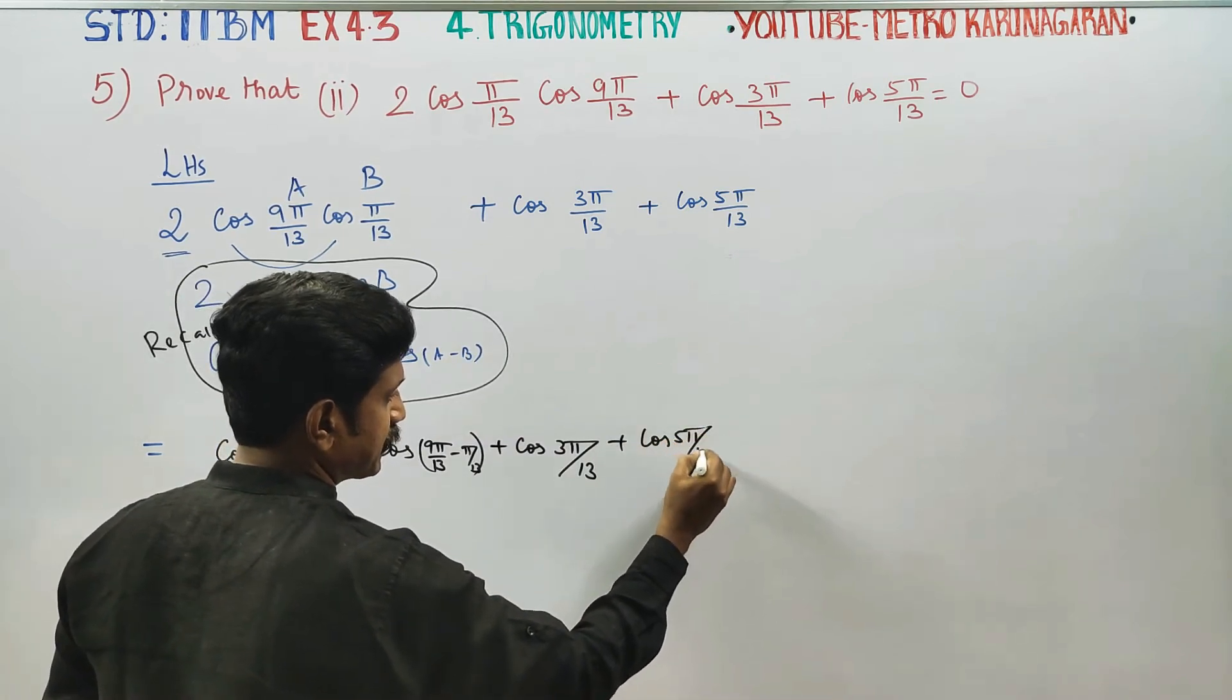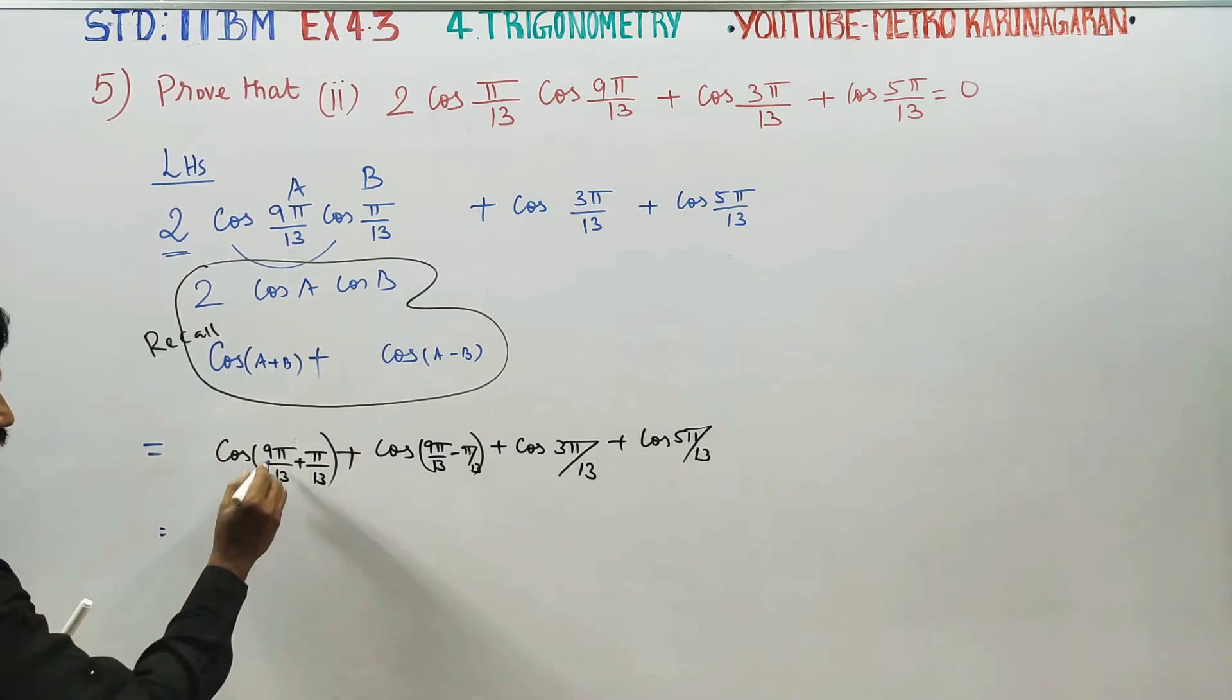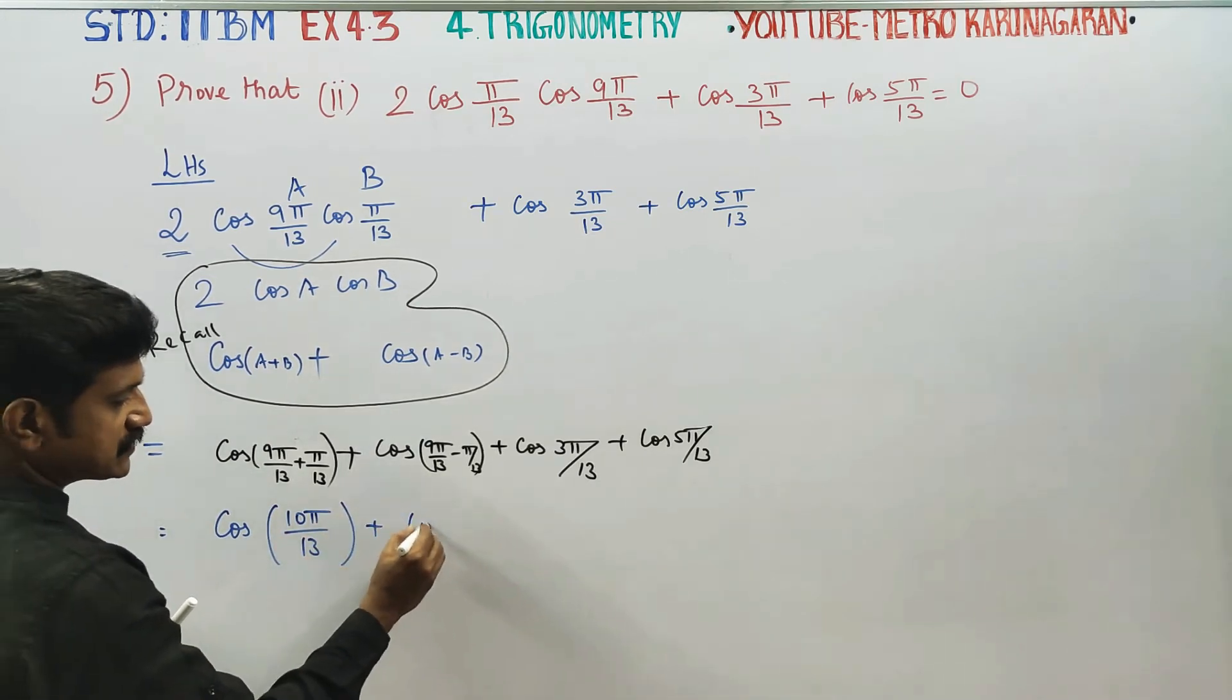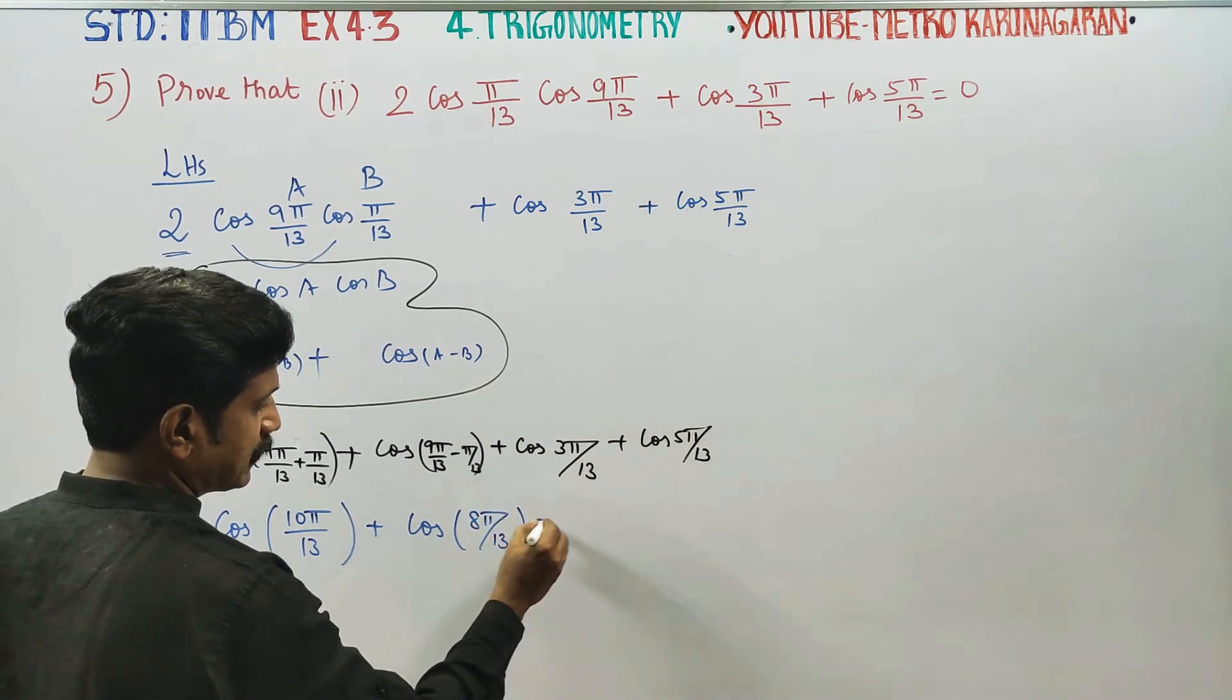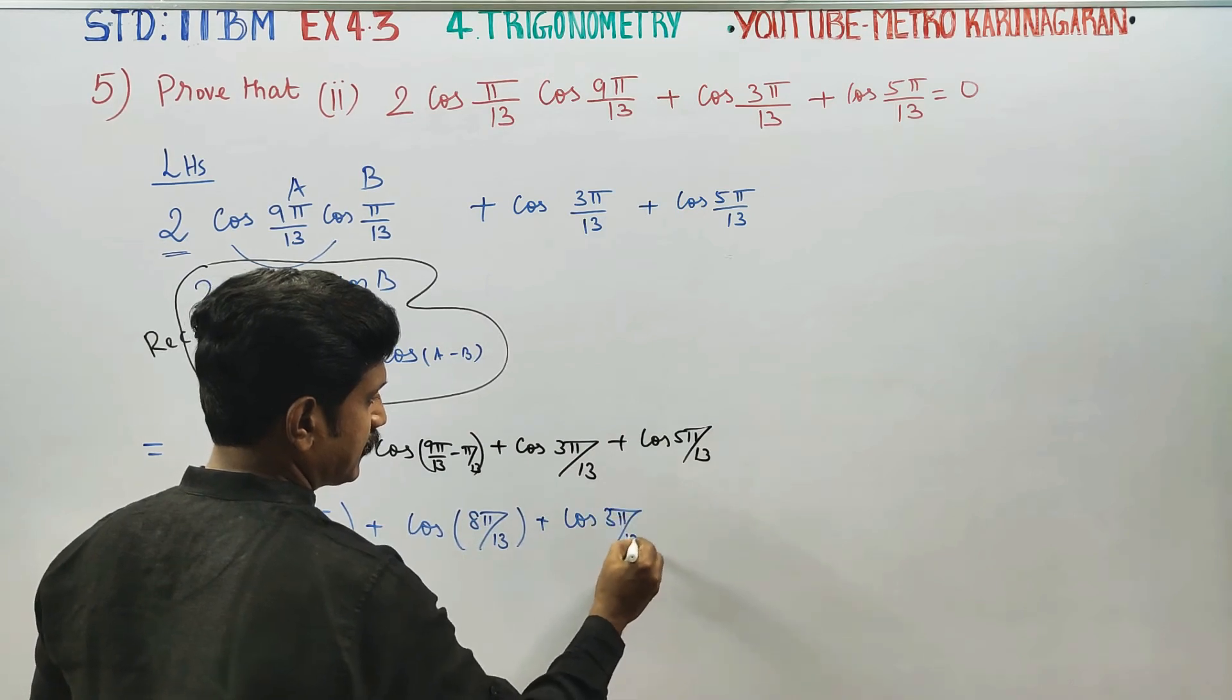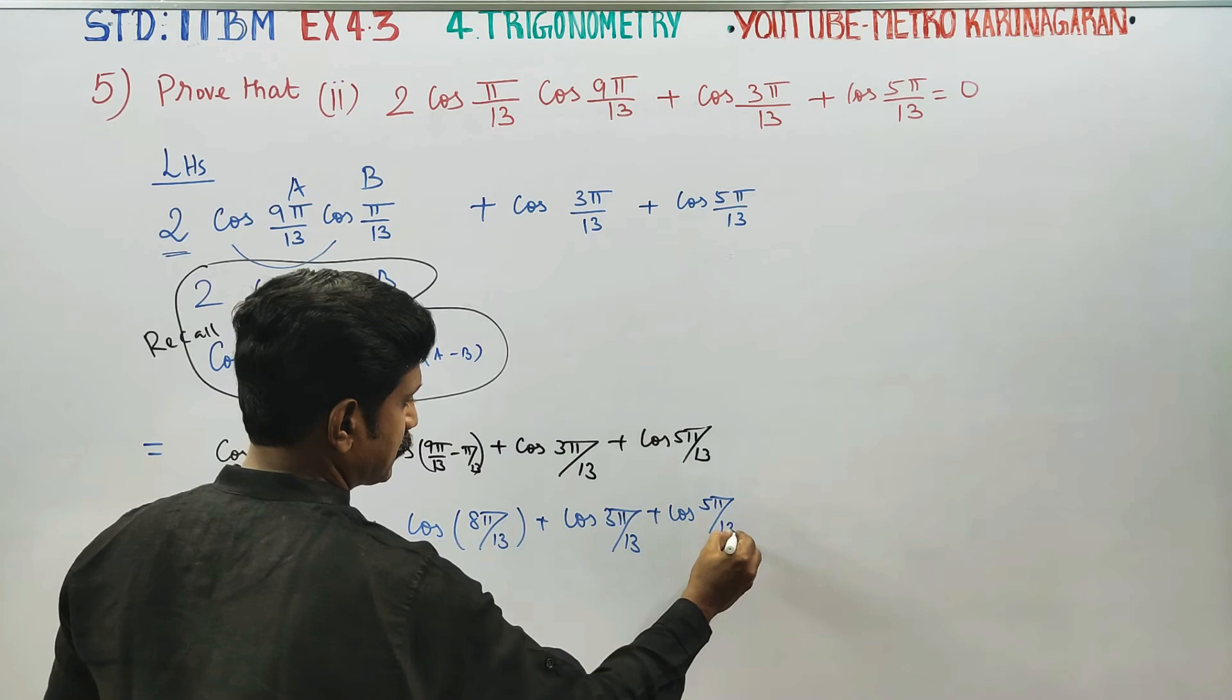Next stage, cos 9 plus 1, 10 pi by 13. Plus cos 9 pi, 1 pi, 8 pi by 13. Plus cos 3 pi by 13. Plus cos 5 pi by 13.